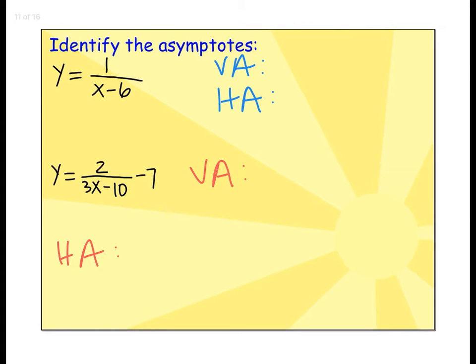Another example: y equals 1 divided by x minus 6. The vertical asymptote goes with the excluded value, which is what makes the denominator 0, so x equals 6. For the horizontal asymptote, I'm looking for a number added or subtracted by itself. I don't have anything, so y equals 0.